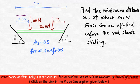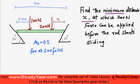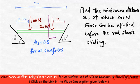Some distances are given to me. I know that the coefficient of static friction is 0.5 for all the surfaces. I am supposed to find out what is the minimum distance x at which I can apply this 200 Newton force so that my rod starts sliding.